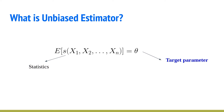An unbiased estimator: assume we have some statistics about random variables or samples. If the expected value of this statistic is equivalent to our specific target parameter θ, we say this statistic S is an unbiased estimator of the parameter θ.